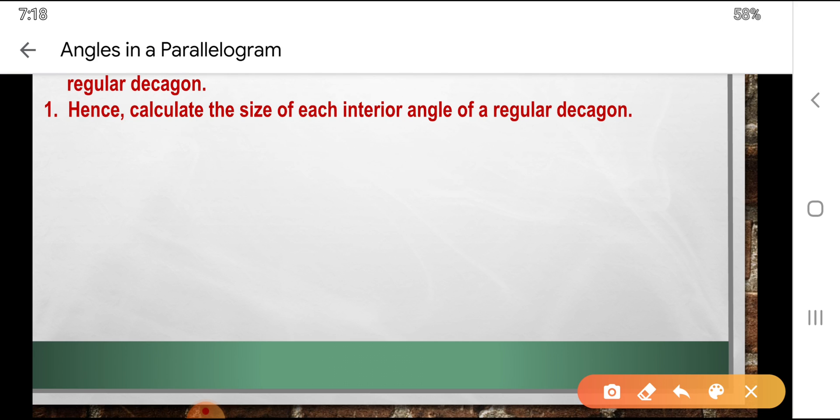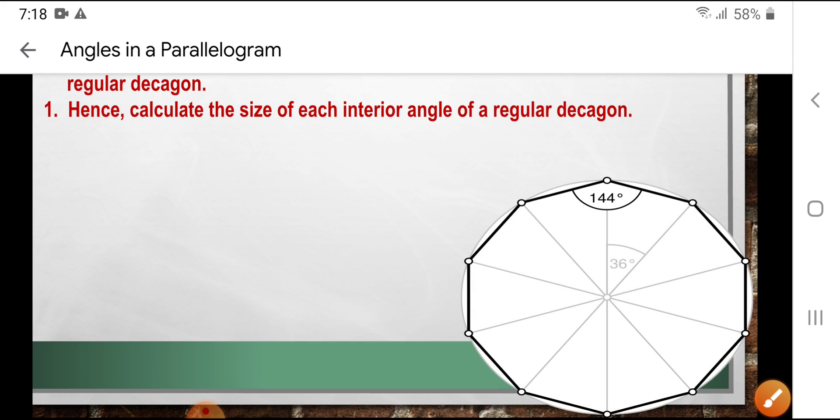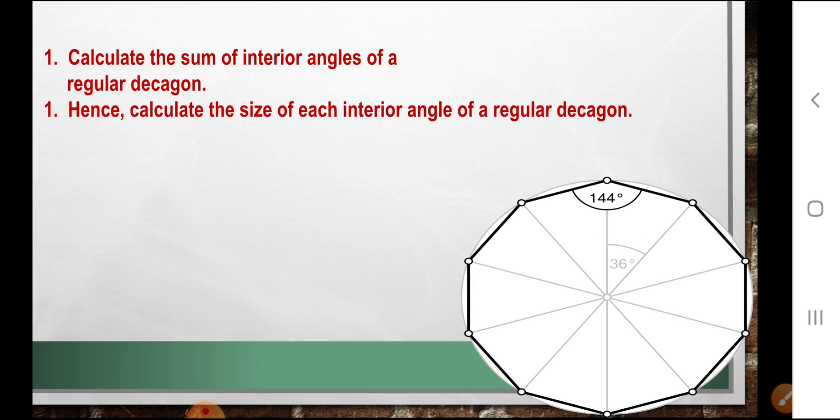You can see this is, you need to calculate the sum of interior angles, not exterior. Interior means inside the angles of a regular decagon. So decagon, that is obviously decagon, ten sides.